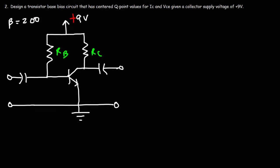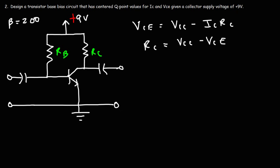Step one is to determine RC. Recall that VCE equals VCC minus IC times RC. Rearranging to solve for RC: RC equals (VCC minus VCE) divided by IC. Our collector supply voltage is 9 volts, which means the centered Q-point value for VCE is going to be half of that — 4.5 volts.